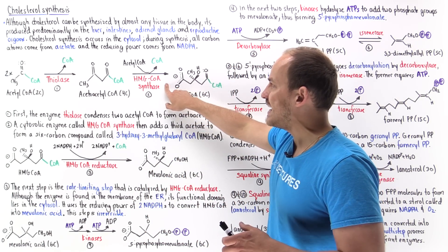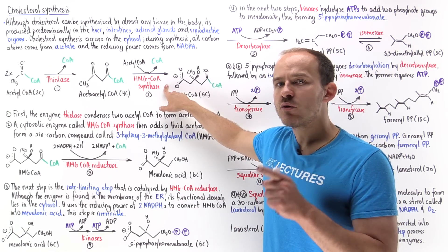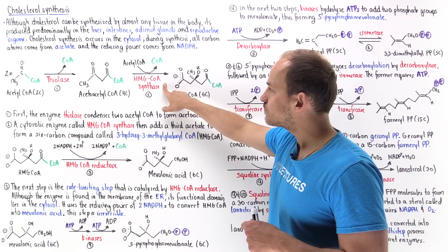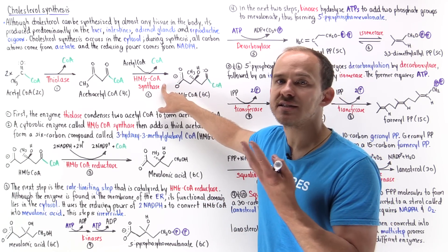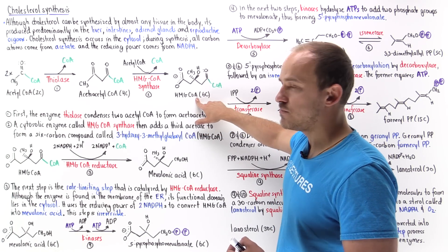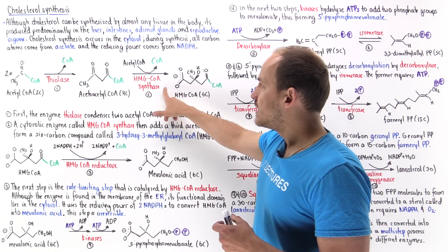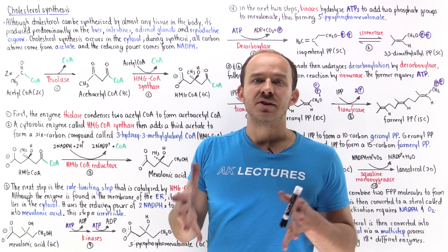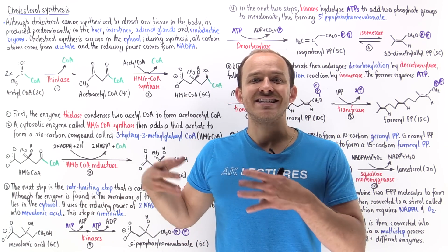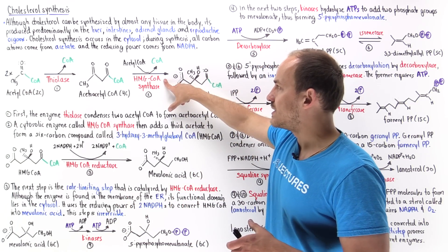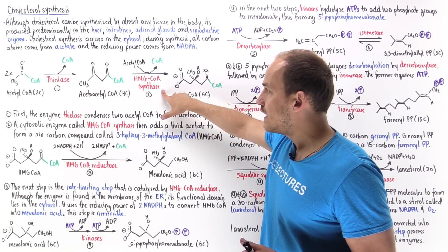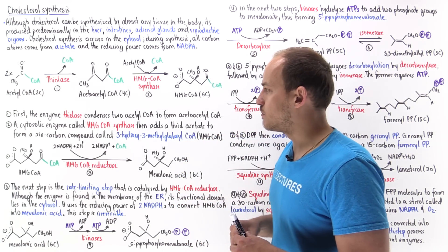Within our liver cells, we actually have two different versions of HMG coenzyme A synthase — two isozymes. One isozyme is located in the cytoplasm of the cell, and this is the version responsible for building the HMG coenzyme A needed to build cholesterol. The other isozyme is located in the mitochondria, and the mitochondrial HMG coenzyme A synthase is important in synthesizing ketone bodies.